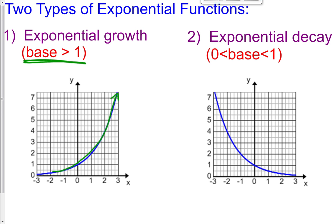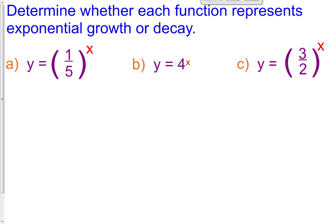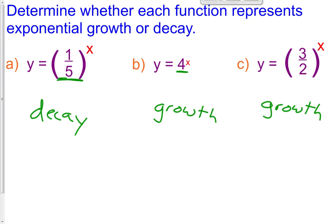Exponential decay is when our base is in between 0 and 1. We never have negative bases in this class, so only worry about positive bases. So practicing those: here we have a base of 1.5, that's less than 1 — this is going to be exponential decay. How about letter b and letter c? 4 is bigger than 1, so this is going to be exponential growth. And letter c, 3 halves is the same thing as 1.5, that's also bigger than 1 — it's growth. All you have to do is look at the bases to determine if it's growth or decay.